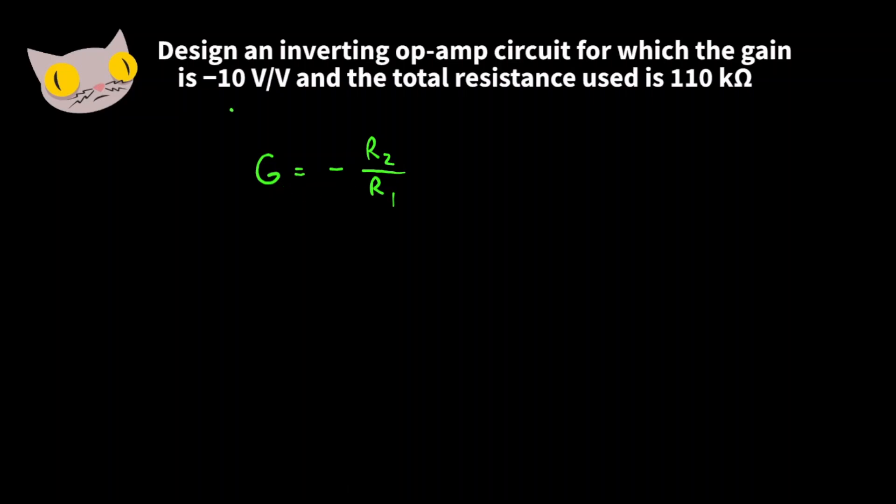We know our gain is negative 10, so we can write negative 10 is equal to negative R2 over R1. We can omit the negative signs, and then multiply both sides by R1.